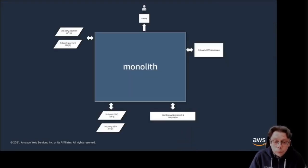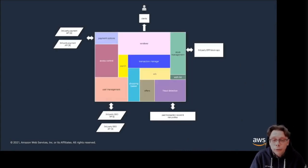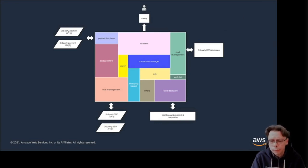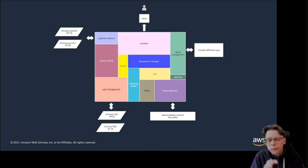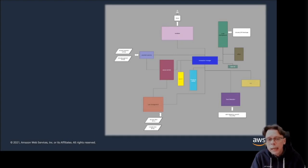Let's have a look at the more traditional setup — a monolith. You would have a number of different modules in that monolith. For example, in this case, an e-commerce application with interfaces to external systems like payment, single sign-on, risk profiles, or an ERP stock application, and obviously you're talking to your clients — you want to sell something.